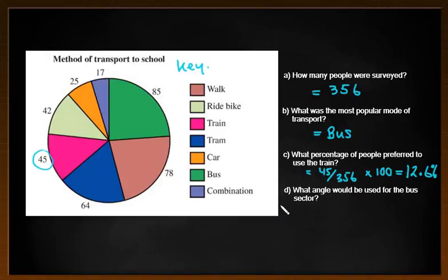And it says what angle would be used for the bus sector. Well bus is the green, we've already spoken about the bus sector. So that's 85 out of 356, and I mentioned already that would be multiplying that by the angle that's at the center of a circle, which we know to be 360 degrees. So once I put that into my calculator, once again it's not going to be a nice answer. I might round this to the nearest degree, so that's going to be 86 degrees to the nearest degree. And that looks right because it's a little bit under 90 degrees, that right angle there or the quarter of the circle. So again, pretty basic questions. You're not often asked to draw them, but you're certainly asked to interpret them.